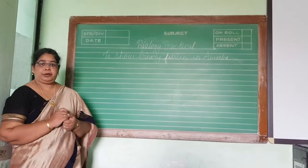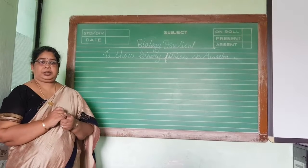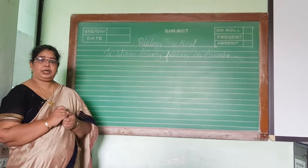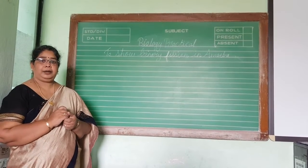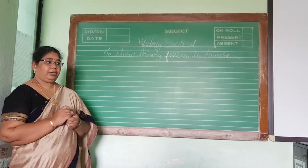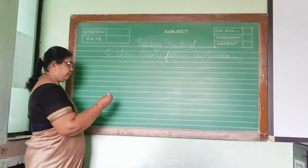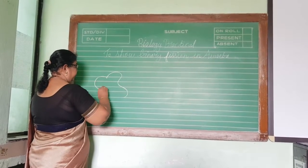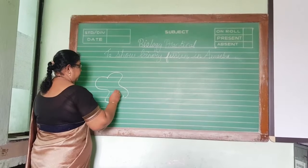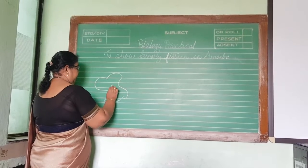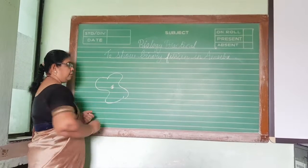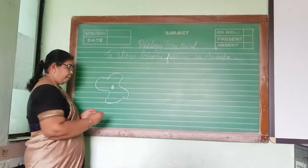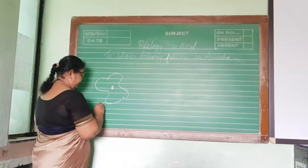Now, everybody must have studied about amoeba. It is a unicellular animal. It does not have any fixed shape. This is called the parent amoeba.